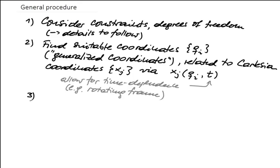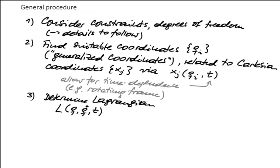Next, you write down the Lagrange function. You determine the Lagrangian as a function of the new coordinates Q, Q-dot, and T. The Lagrange function is the difference of kinetic energy and potential energy. The kinetic energy, you know the formula in Cartesian coordinates — it's simply a function of the velocities X_i-dot. But using the transformation rule from the previous step, you express these velocities X_i-dot in terms of the new coordinates Q, Q-dot, and possibly also explicitly time.